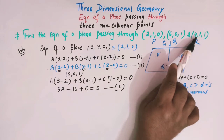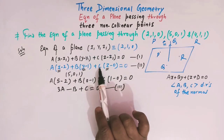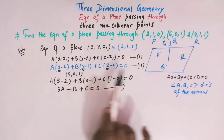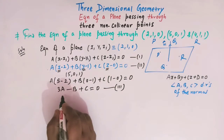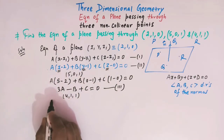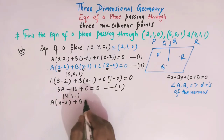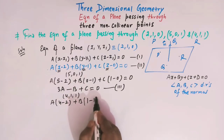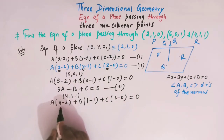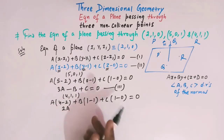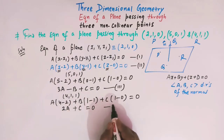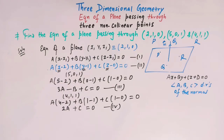We have used two points to get equations. Now we use the third point (4, 1, 1). Substituting into equation (2): a(4 − 2) + b(1 − 1) + c(1 − 0) = 0, which gives 2a + 0 + c = 0, so 2a + c = 0. This is equation (4).